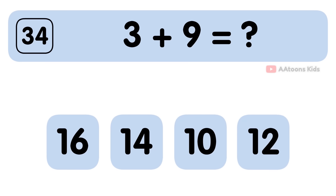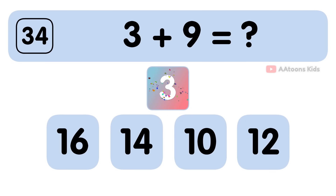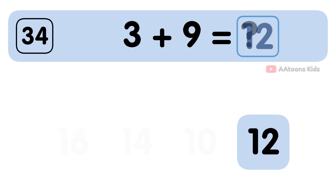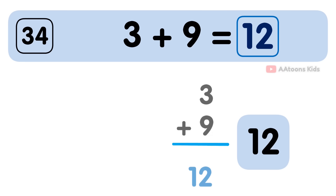3 plus 9 is equal to 12. The answer to 3 plus 9 is 12.